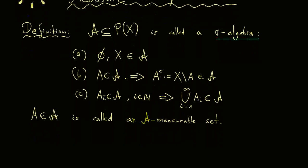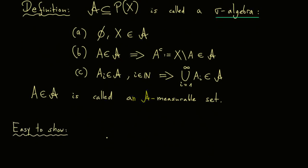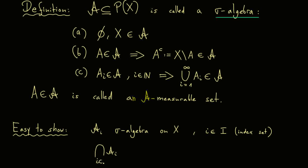That's good enough for a short recap. Now it's easy to show the following: imagine you have a lot of different sigma algebras on a given set X. Let's call them A_i, where i comes from an arbitrary index set. It does not matter if the index set is countable or not. What we can do then is look at all the intersections of these sigma algebras, written as the big intersection over the index set. This is easy to show — I advise you to try it — that this indeed gives you again a sigma algebra.